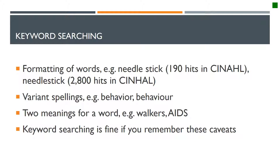In doing a keyword search, you also need to be aware of how formatting your words affects the search results. For example, if I'm looking for articles about needle sticks and I format the word needle stick as two words versus one word, I'm going to get a very significant difference in the number of results that I retrieve. Also be aware of the variant spellings between the British and American versions of words.